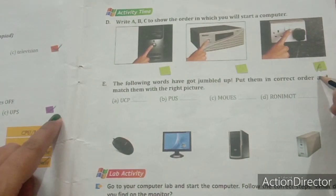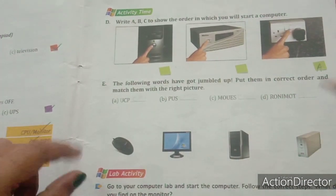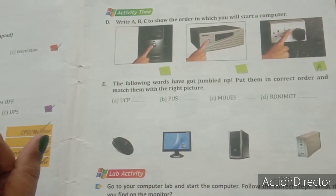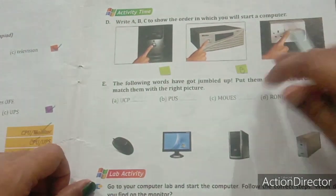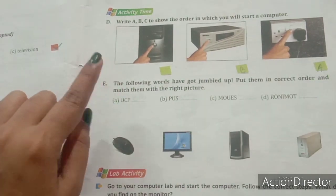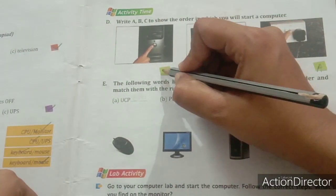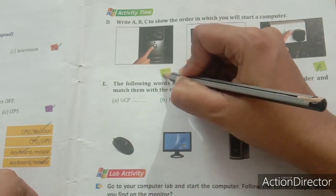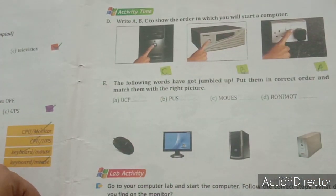Now write B for the second step. What is the second step? Turn on the UPS. So write B below the UPS. Then the last one remaining is CPU — turn on the CPU. So write C for CPU. Clear everyone?